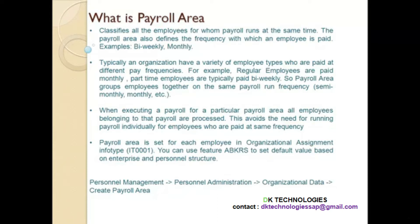Now, if you recall infotype 1, which is 0001 organizational assignment — in that infotype, you might have noticed there is a small field called payroll area. That is the place where you store the payroll area for an employee. So for any employee record, if you go and see what payroll area is attached, the system knows which employees to include in the payroll based on the payroll area. That particular field, payroll area in infotype 1, plays a very important role, because running payroll is basically running a payroll for the payroll area, and the system will easily know which employees to include.